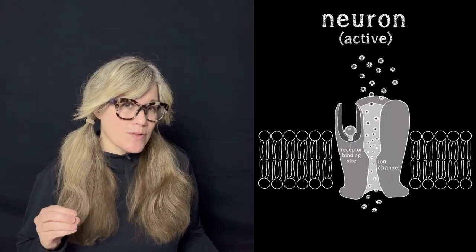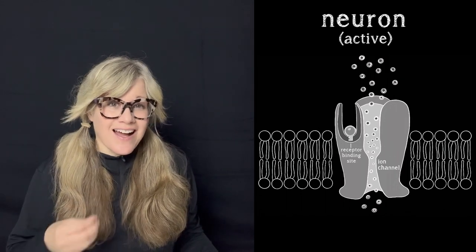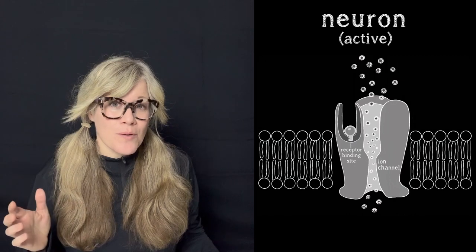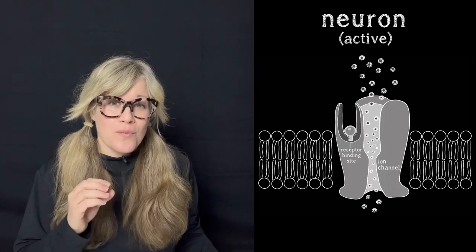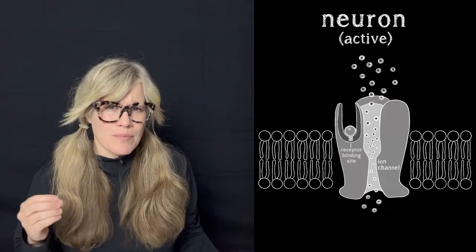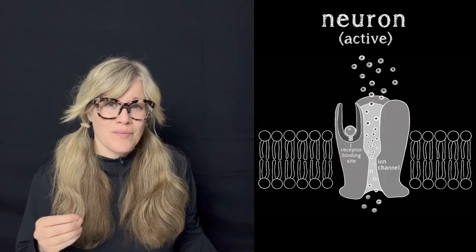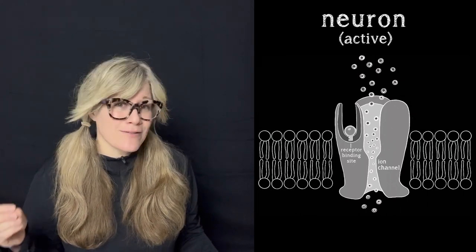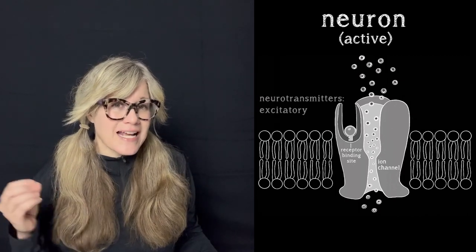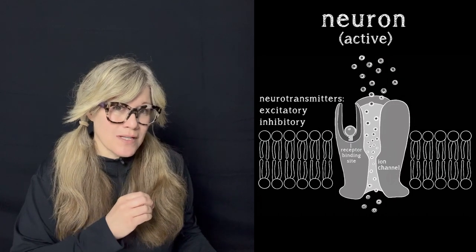So let's rewind back to the postsynaptic dendrite where neurotransmitter molecules have unlocked the ion channels, and let's approach how the signal converts from chemical back to electrical form with a little more detail. The how is going to depend on a few things: one is the type of neurotransmitter, and another is the ion channel it opens and the particular ions that channel allows into the cell. As for types of neurotransmitters, there are excitatory neurotransmitters and inhibitory neurotransmitters.